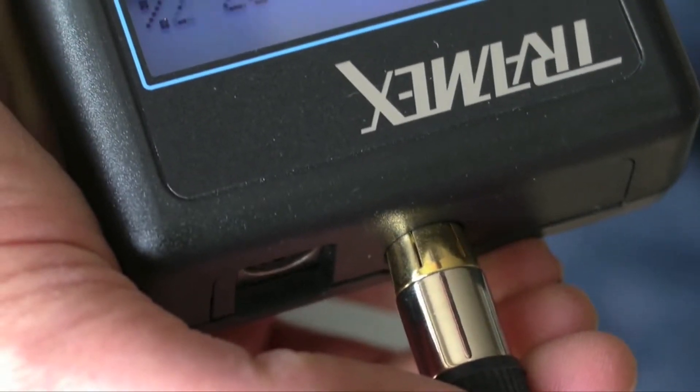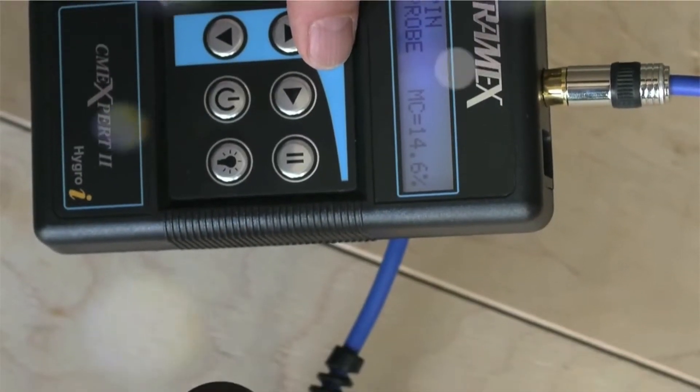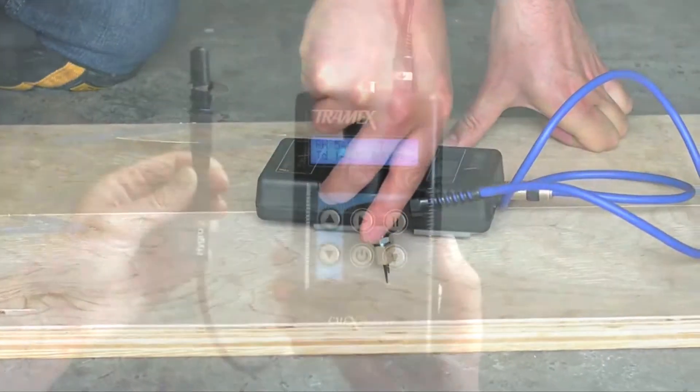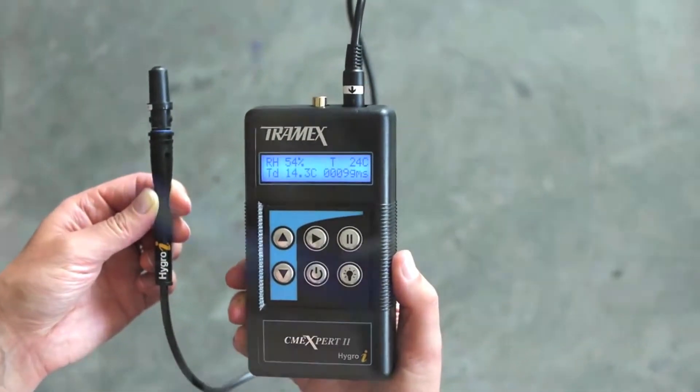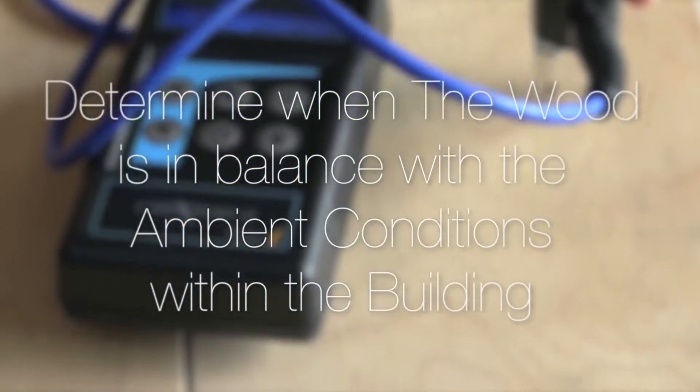The CMEx can also be used with the handheld pin probe for measuring moisture in wood. This is especially useful when installing wood floor coverings. By comparing the moisture content of wood with the ambient relative humidity conditions, we can determine when the wood is in balance with the ambient conditions within the building.